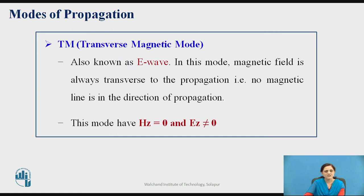The next mode is the transverse magnetic (TM) mode, also known as the E-wave. In this mode, the magnetic field is always transverse to the direction of propagation — that is, no magnetic field component exists in the direction of propagation. Thus the z-component of the magnetic field equals zero, while the z-component of the electric field is not equal to zero.